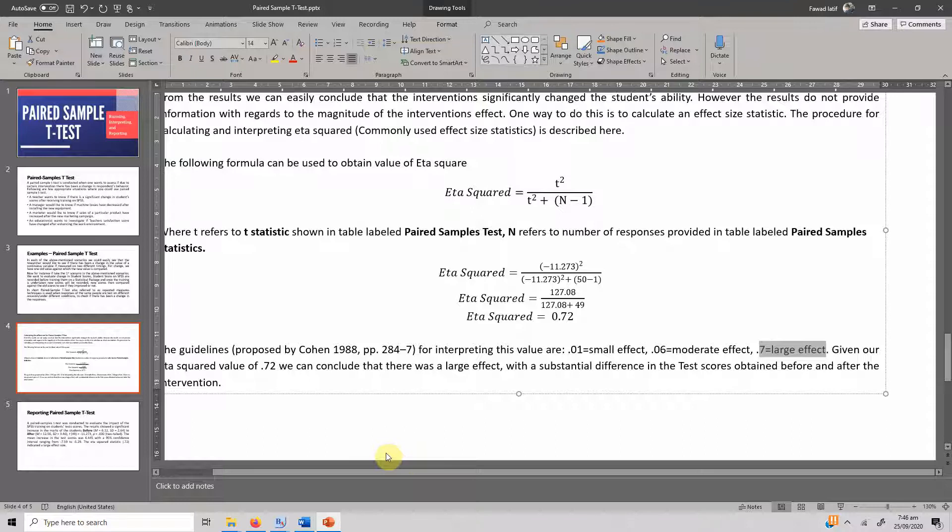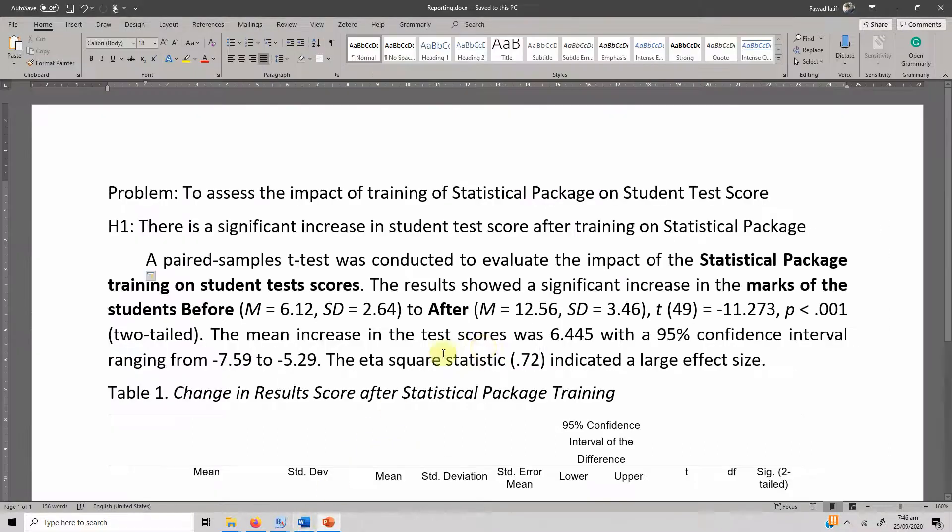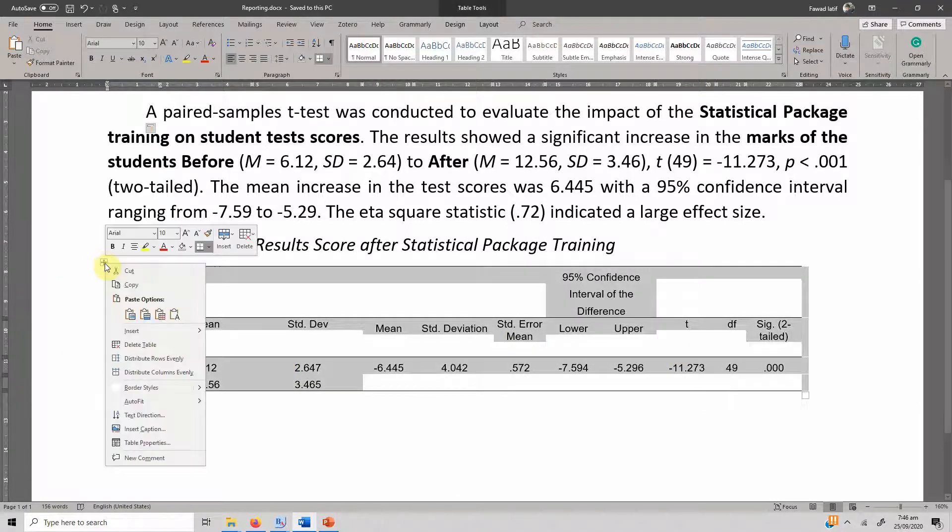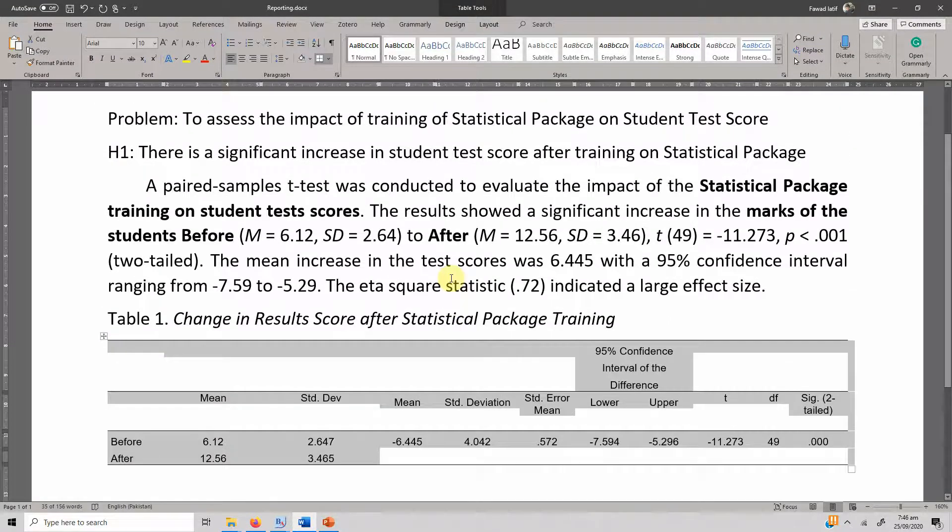Now here is a table on how to report the results. So this is how you can run paired-samples t-test, interpret paired-samples t-test, and report paired-samples t-test. I hope the video would have helped you understand what paired-samples t-test is and how to run it, interpret it, and report it. Thank you very much.